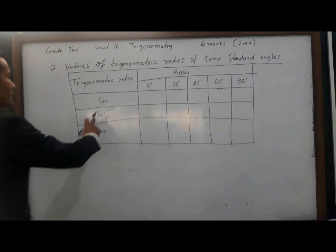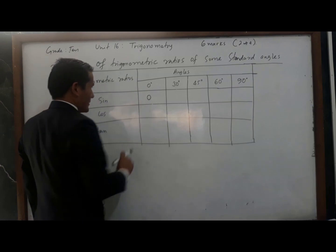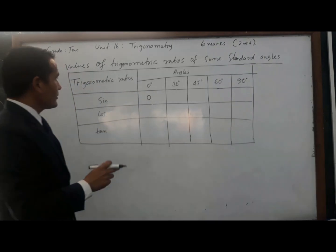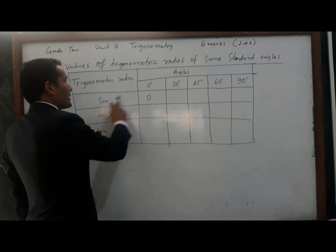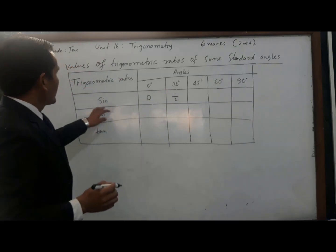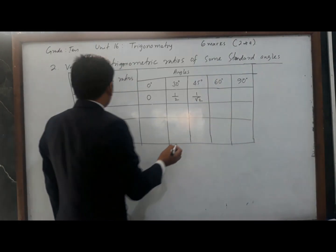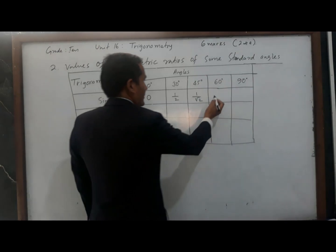The value of sine 0 degree is 0. The value of sine 30 degree is 1 by 2. Sine 45 degree is 1 by root 2. Sine 60 degree is root 3 by 2. And sine 90 degree is 1.